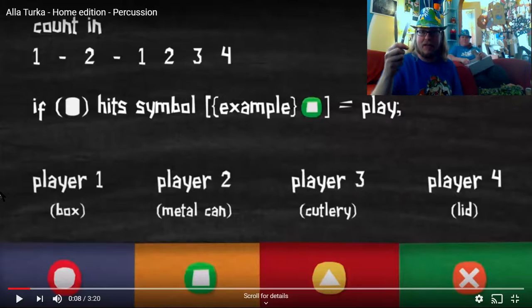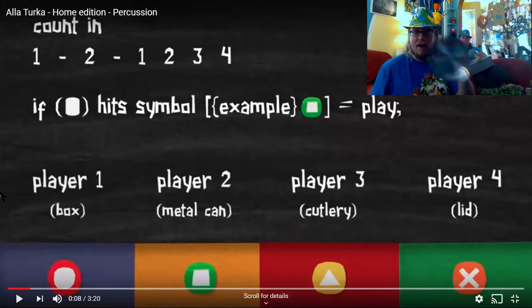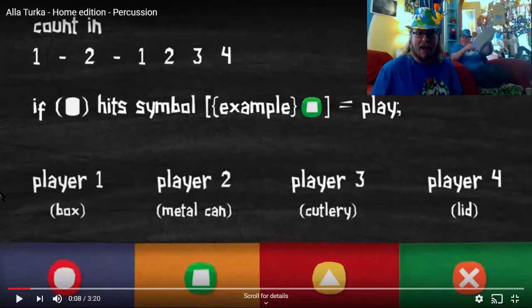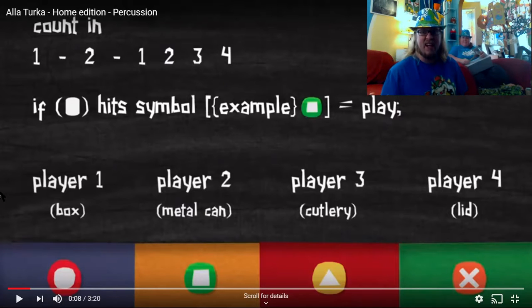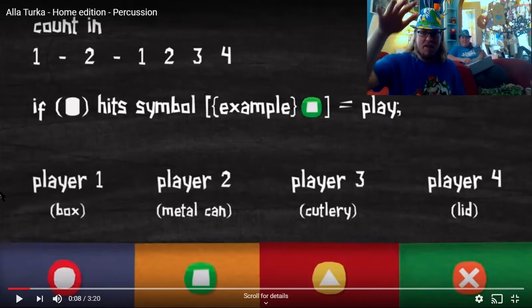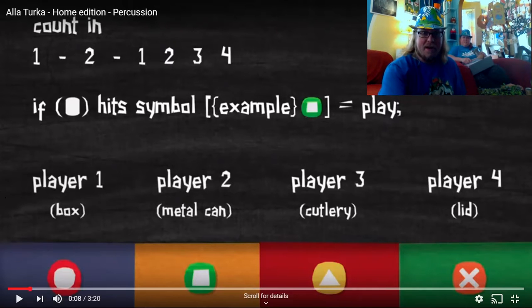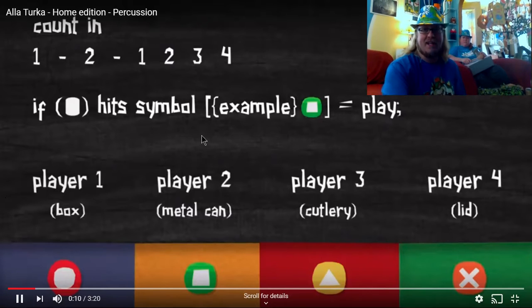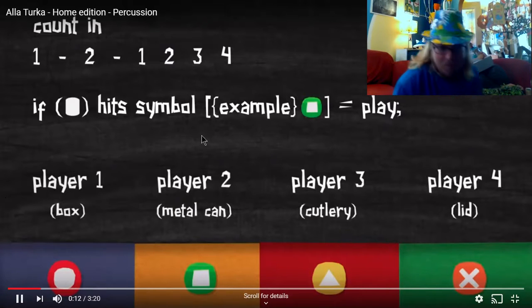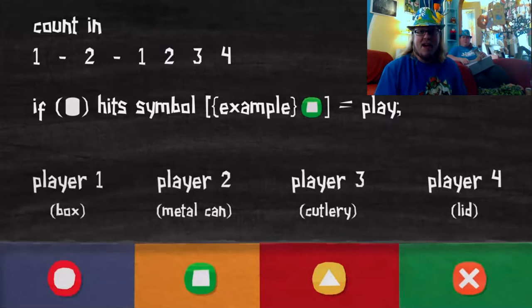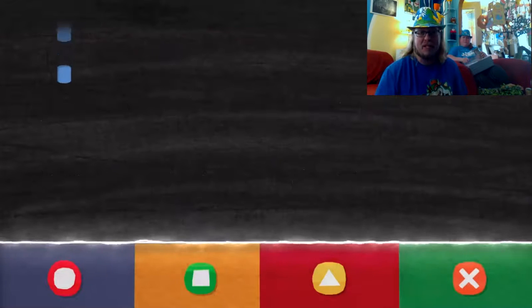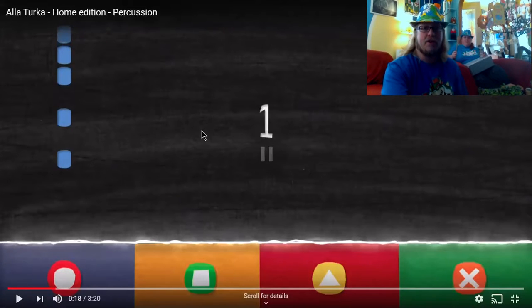So, I will be playing the cutlery and the lid. Mrs. P is going to be playing the box and the metal can. And it's kind of like a guitar hero. The notes kind of come from the top. And then when they hit the bottom, then you got to play. So, today we are playing Rondo a la Turca. Actually, it's a piano piece by Mozart. And the last part of the piano piece is known as the Rondo a la Turca.